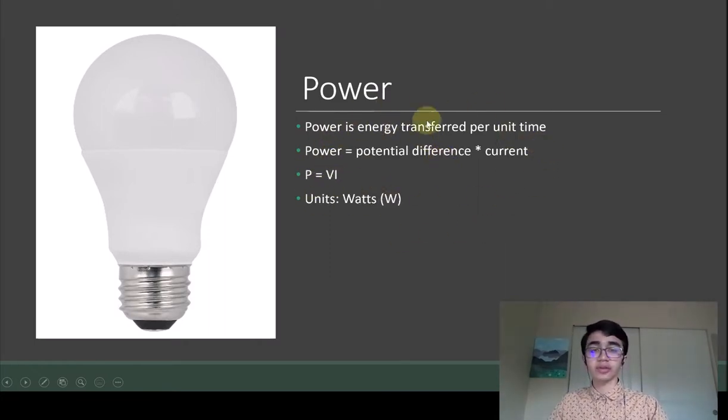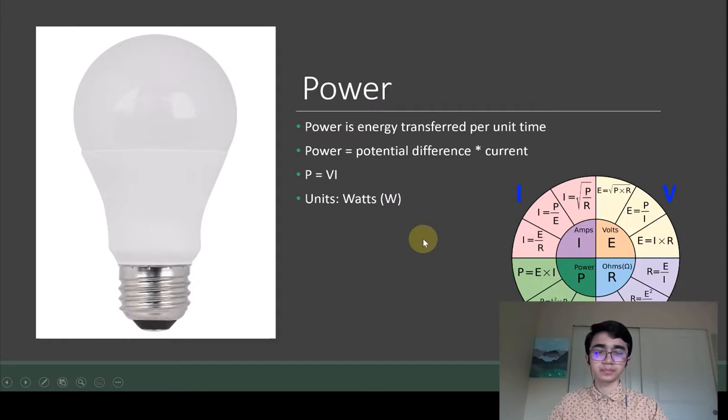The electrical definition for power is potential difference times current, so P equals V times I. If you've taken general physics, you know that the units for power is watts, or W.